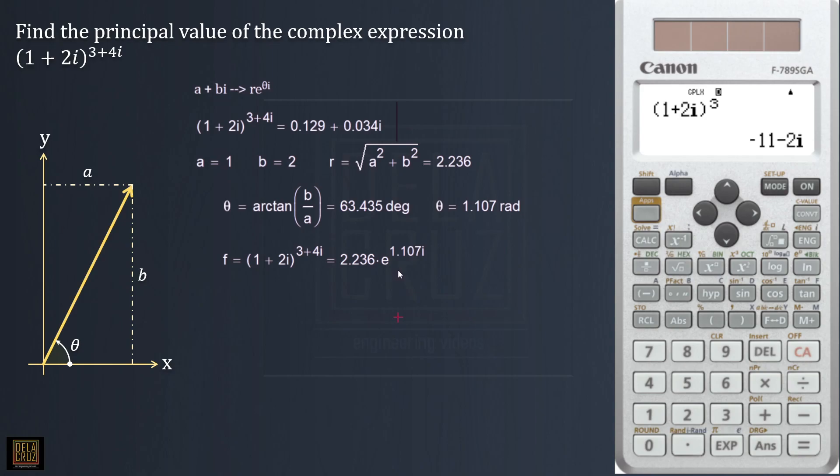We'll try to manipulate this one. That's gonna be, let's say f equals - we can rewrite this as e raised to ln of 2.236, algebraic manipulation, then times e raised to 1.107i, raised to (3 + 4i).